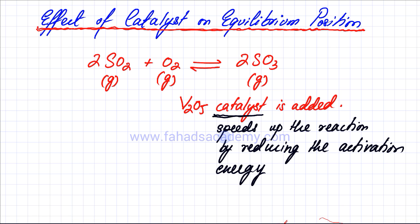Basically what a catalyst does is that it speeds up the reaction. Now in an equilibrium, what a catalyst does is that it speeds up both the forward and the backward reaction equally. Both activation energies are reduced.